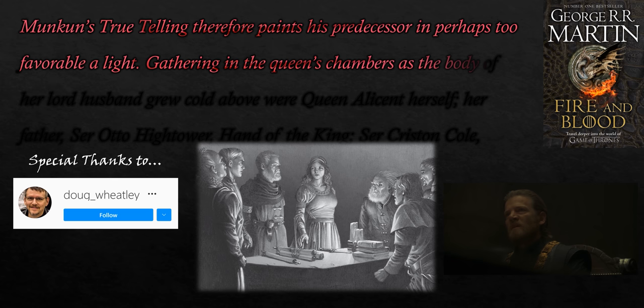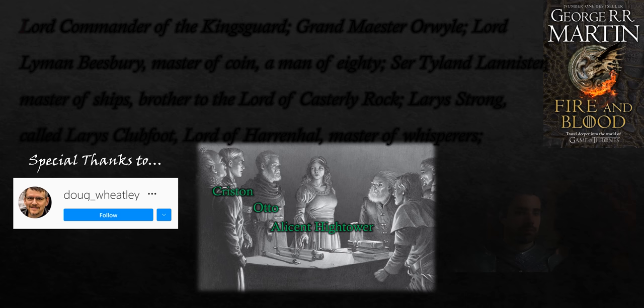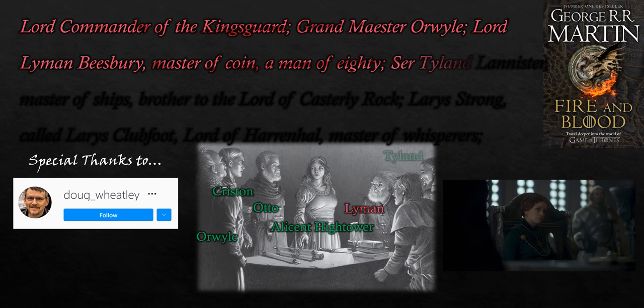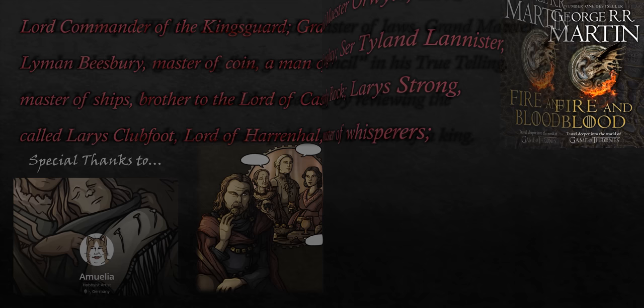Gathering in the Queen's chambers as the body of her lord husband grew cold above, there were: Queen Alicent herself; her father, Ser Otto Hightower, Hand of the King; Ser Criston Cole, Lord Commander of the Kingsguard; Grand Maester Orwyle; Lord Lyman Beesbury, Master of Coin, a man of 80; Ser Tyland Lannister, Master of Ships, brother to the Lord of Casterly Rock; Larys Strong, called Larys Clubfoot, Lord of Harrenhal, Master of Whisperers; and Lord Jasper Wilde, called Ironrod, Master of Laws. Grand Maester Munkun dubs this gathering the Green Council in his true telling.